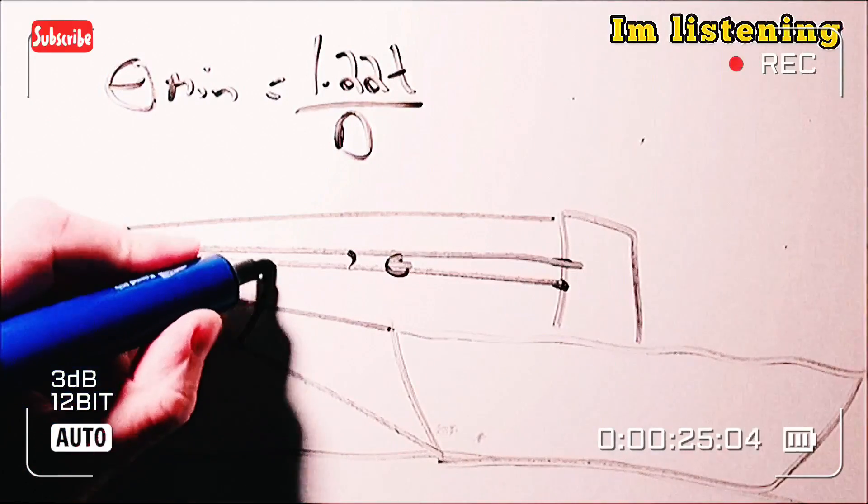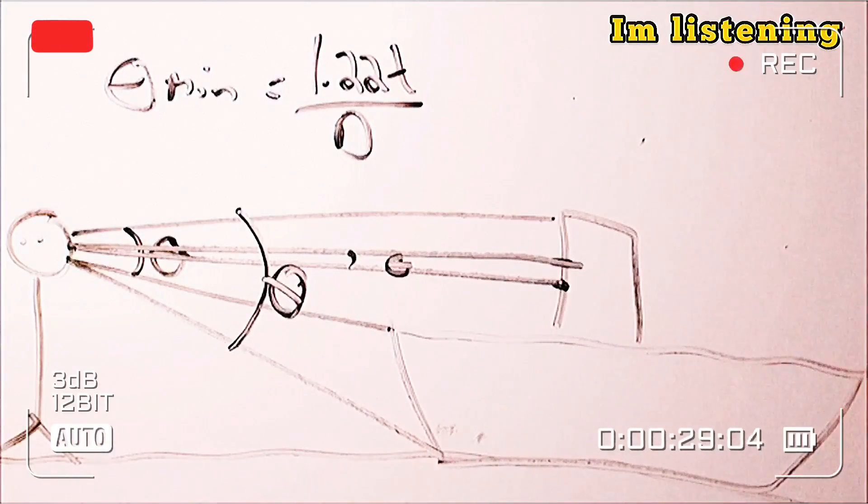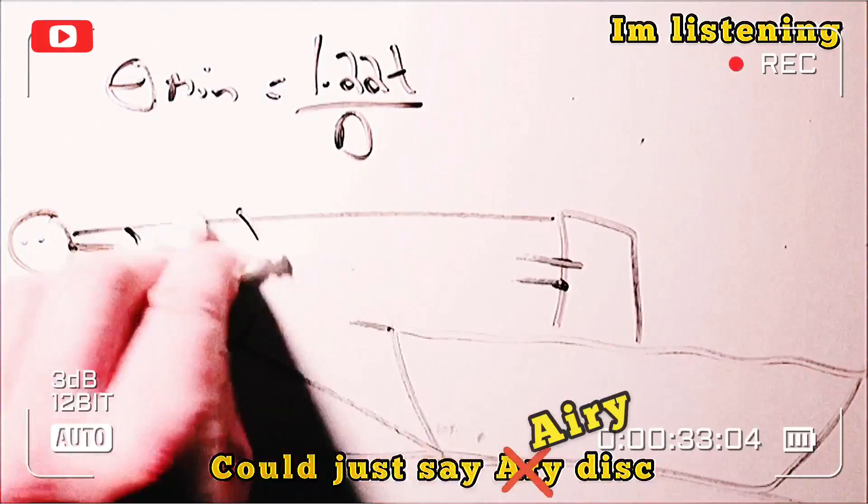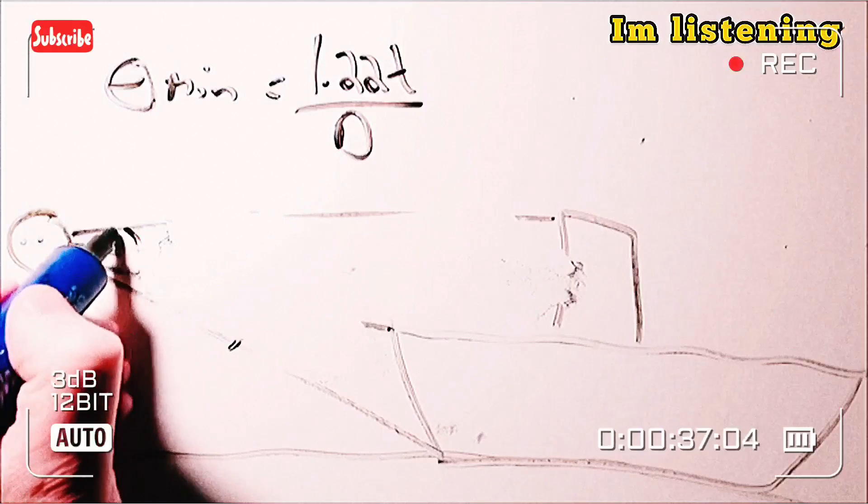If I want to resolve the bottom of the boat to the top of the boat, then I've got this entire angle, and if that is bigger than theta min, I'll be able to tell the top from the bottom. But nowhere, absolutely nowhere, does the Rayleigh criterion say it's got anything to do with things disappearing from the bottom.